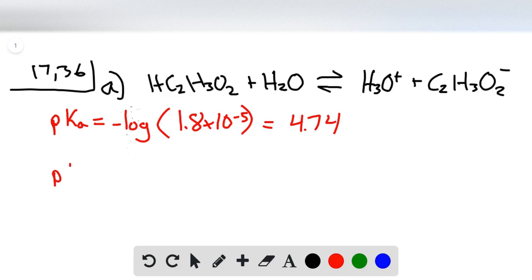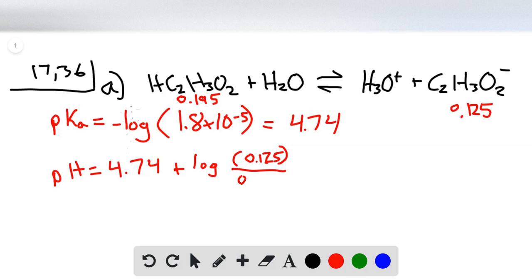So pH will equal 4.74 plus the log of the two concentrations that we have, which in problem 28 we're given 0.195 and 0.125. So the log of the base, which is 0.125, over the acid. If we take this log and add to 4.74, we get 4.55, which if we check the problem we did with the ice table, that is the correct answer.